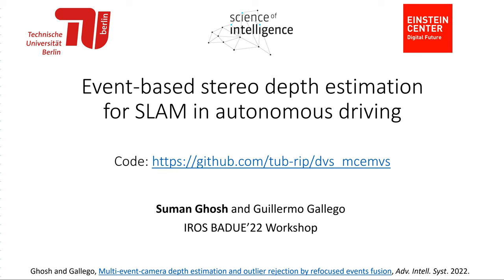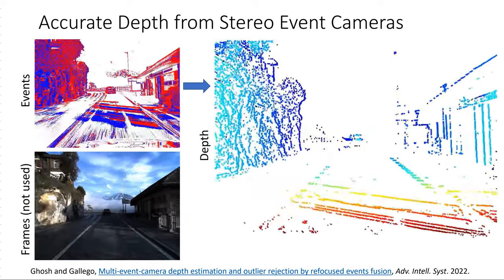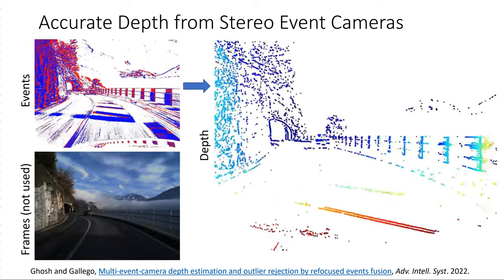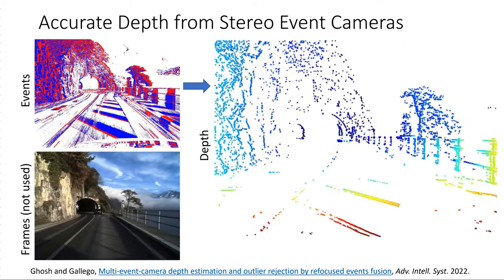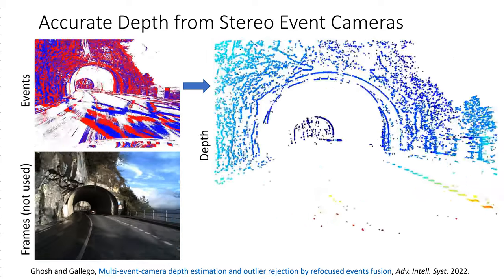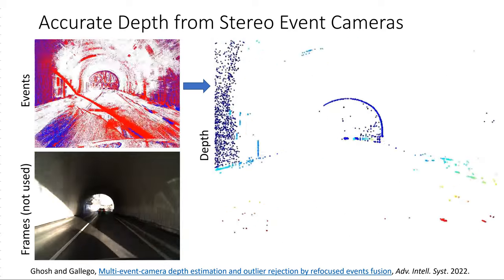We present event-based stereo depth estimation for SLAM in autonomous driving. In this work, we estimate the depth of dynamic scenes using moving stereo event cameras. The depth map on the right is color-coded with red for nearby and blue for far away.